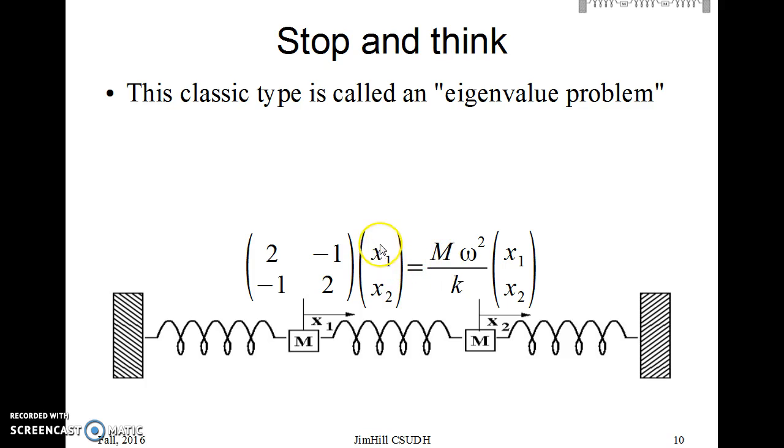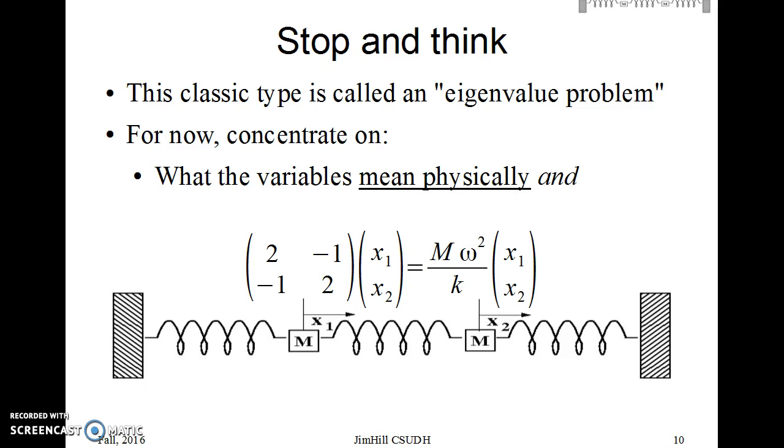So what I want is some vector, x1, x2, which when I multiply by this matrix, I get a scalar multiple of the same vector. We could spend days talking about eigenvalue problems in general. We will spend a lot of time in class, but I'm here to give you a 10 or 15 minute lecture on it. For now, we're going to concentrate on what the variables mean physically and what we're looking for. So again, there are two variables, x1, x2, where those masses go, and we're looking for normal modes. They move in a reproducible standard pattern.